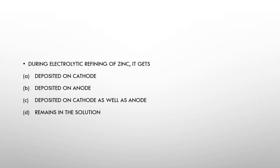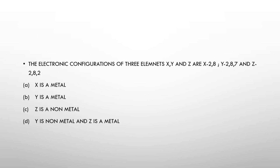The second question: during electrolytic refining of zinc, it gets — deposited at cathode, deposited at anode, deposited at cathode as well as anode, or remains in solution? The answer is deposited at cathode, as during electrolytic refining the pure metal — whatever zinc is there — gets deposited on the cathode.